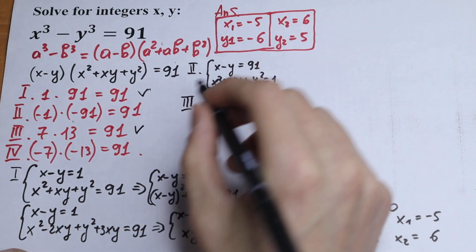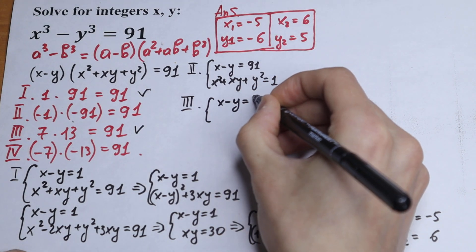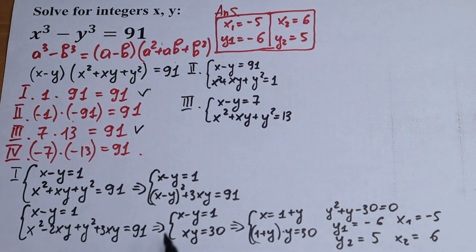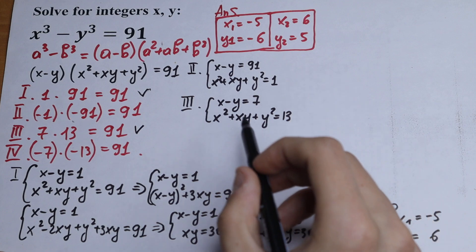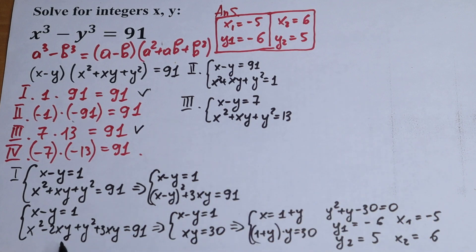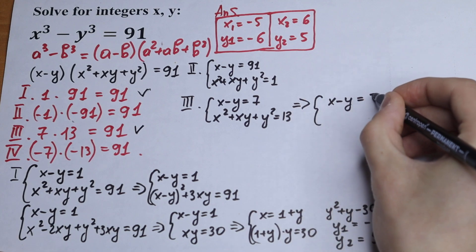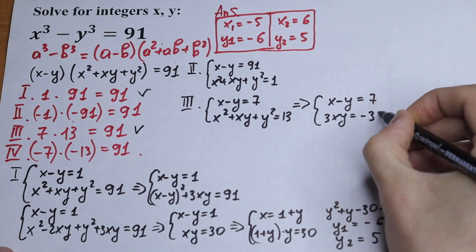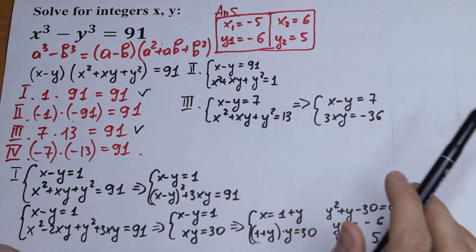Now let's go to the third case: x minus y equals 7 and x² plus xy plus y² equals 13. Using the same logic — writing minus 2xy plus 3xy to create a perfect square — we substitute x minus y equals 7, giving 49 plus 3xy equals 13, so 3xy equals minus 36.